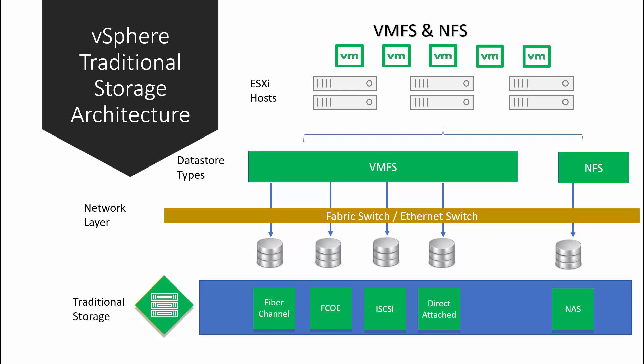Once the LUN is available to the ESXi host, you rescan the storage devices and the storage becomes visible. You then create a datastore and install virtual machines on it. This datastore is shared between ESXi hosts, so whenever there is a failure of one ESXi host, the virtual machine can run on another host because both are sharing the same datastore.